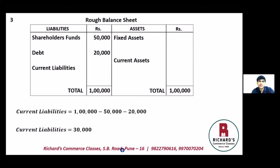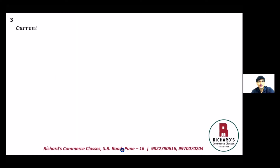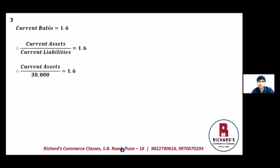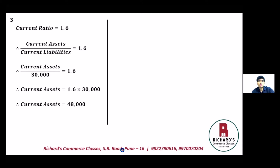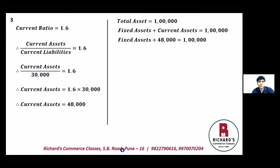Using the current ratio of 1.6: current assets divided by current liabilities equals 1.6. Current liabilities is 30,000. So current assets divided by 30,000 equals 1.6, giving current assets as 1.6 multiplied by 30,000, which is forty-eight thousand rupees. Total assets are one lakh, so fixed assets equals one lakh minus 48,000, which is fifty-two thousand rupees.